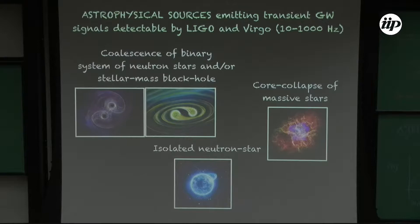If you look at the rates predicted for supernovae in our galaxy, it's bound to happen almost any minute. The last one was in Kepler's time, about 500 years ago, and the estimated rate per galaxy is about once every 500 years. The problem with LIGO is that it doesn't have a reach much beyond our galaxy. And of course there are isolated neutron stars that give rise to continuous gravitational waves.